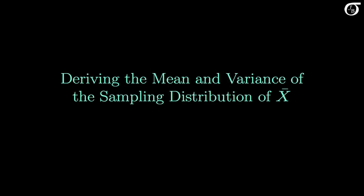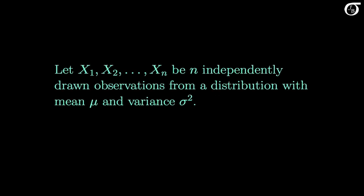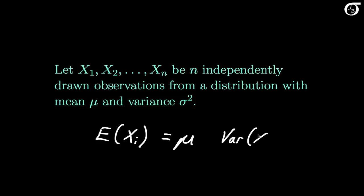Let's derive the mean and variance of the sampling distribution of the sample mean X-bar. Let X1 through Xn be n independently drawn observations from a distribution with mean mu and variance sigma squared. Each one of these X's has a mean of mu and a variance of sigma squared. That is, the expectation of each Xi equals mu, and the variance of each Xi equals sigma squared.